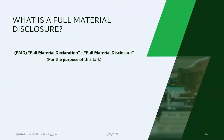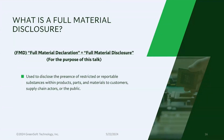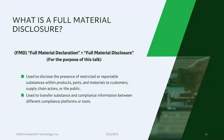What is a full material disclosure? It's a disclosure intended to disclose the presence of restricted or reportable substances within the products, parts, or materials you're providing to your customers, supply chain actors, or even the public. It's a method we can use to transfer that kind of information between supply chain actors within different platforms or tools — from my database to your database — so as products move through the supply chain, this information can follow along.